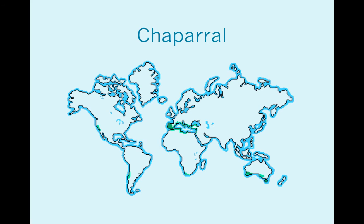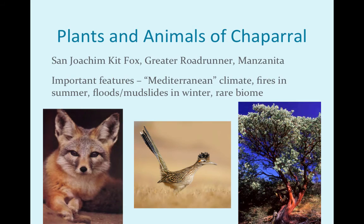The chaparral appears on the AP exam every single year, largely because of its uniqueness. You can see it in the green areas — a little bit in California, a lot around the Mediterranean, a good part of Spain, a little bit of South America, and some of Australia. The things that make it unique: no real trees — the manzanita on the right is actually a large shrub, very shrubby. It has a Mediterranean climate, meaning the weather is mild and beautiful almost all year, making it popular to live there. Unfortunately, chaparrales are also famous for fires in the summer and floods and mudslides in the winter.